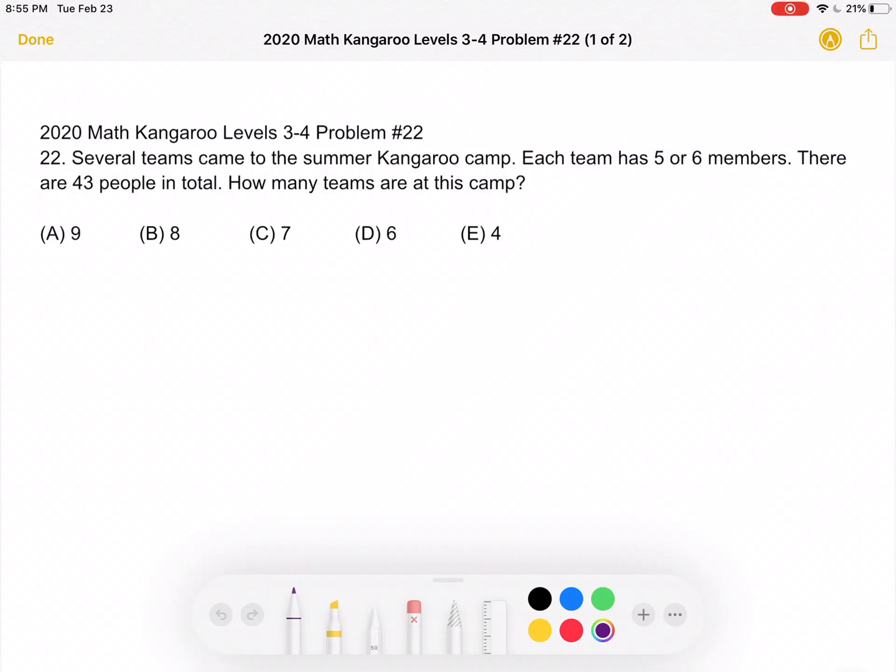This is the 2020 Math Kangaroo Levels 3-4 Problem Number 22. Several teams came to the Summer Kangaroo Camp. Each team has 5 or 6 members. There are 43 people in total. How many teams are at this camp?